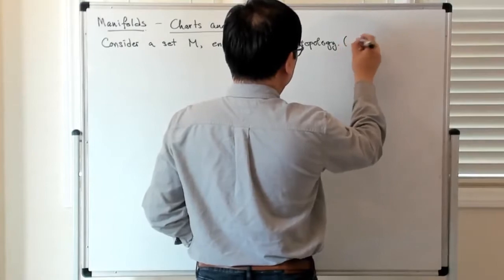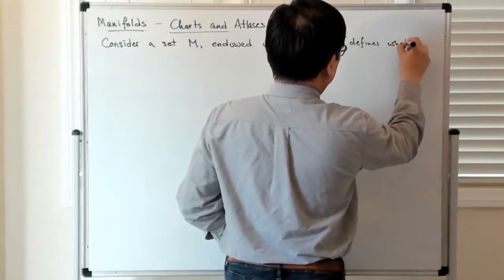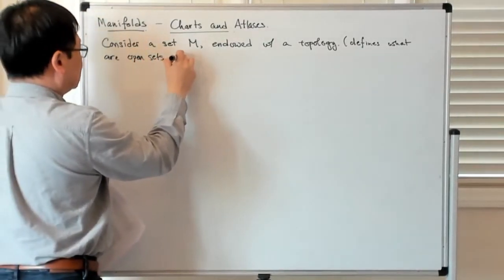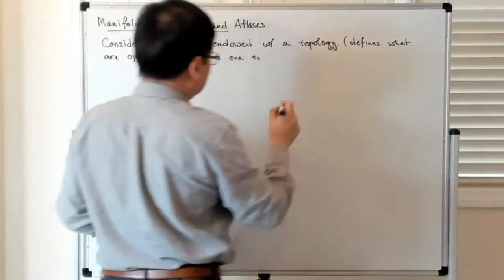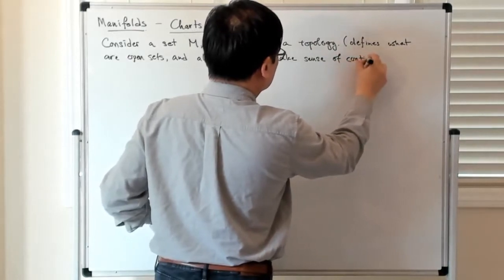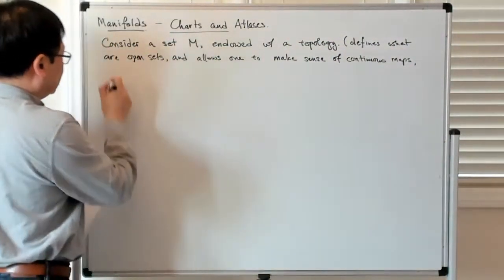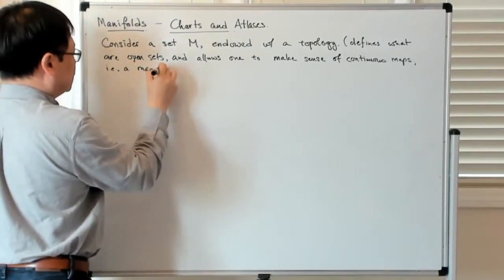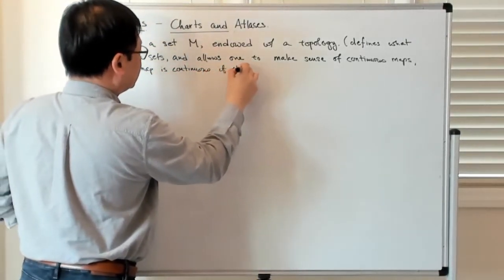So the topology defines, if you will, what open sets are and allows one to make sense of continuous maps — maps having the property that the map is continuous if the pre-image of an open set is open.